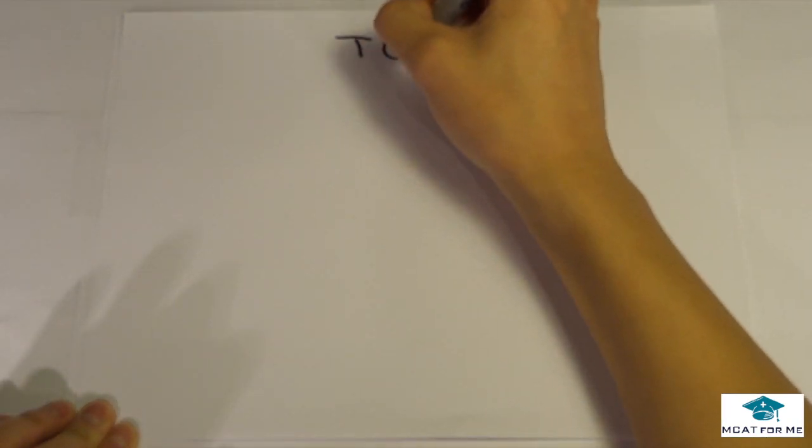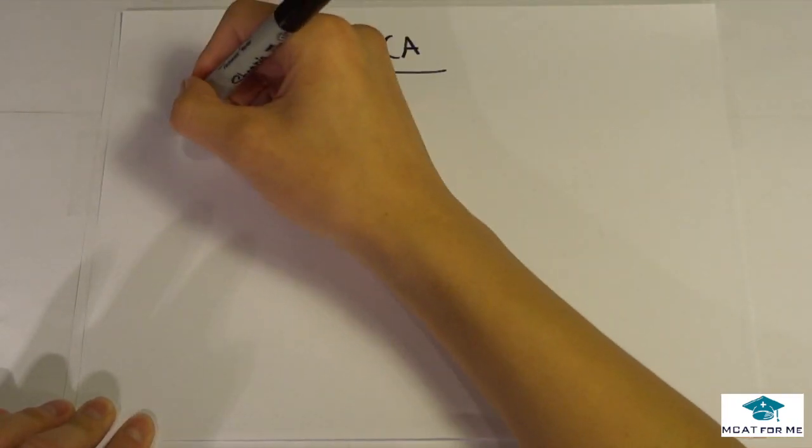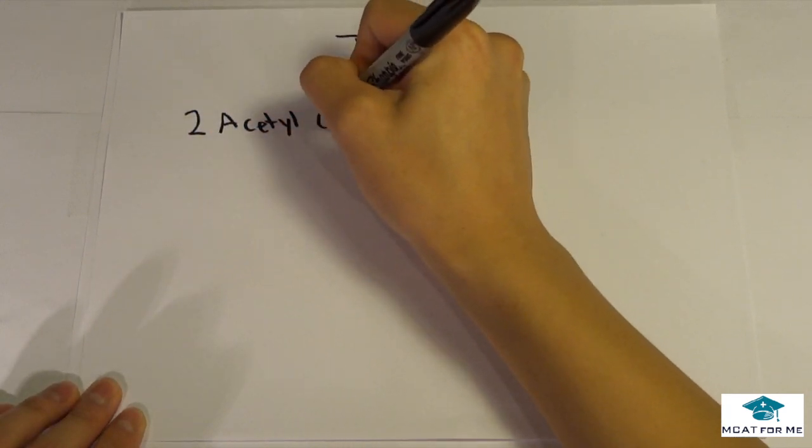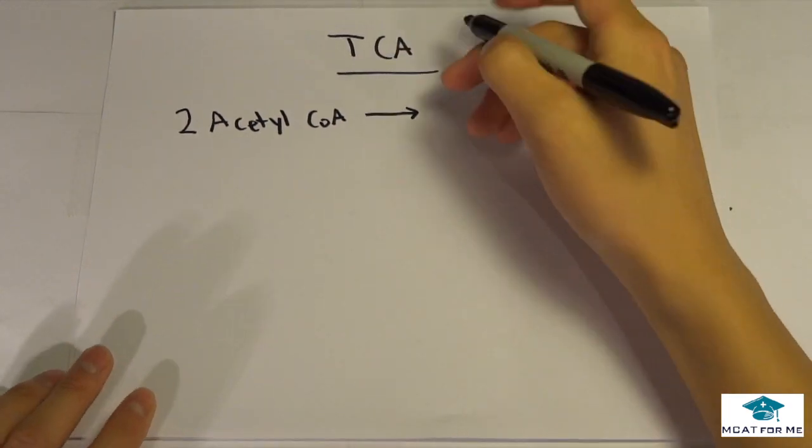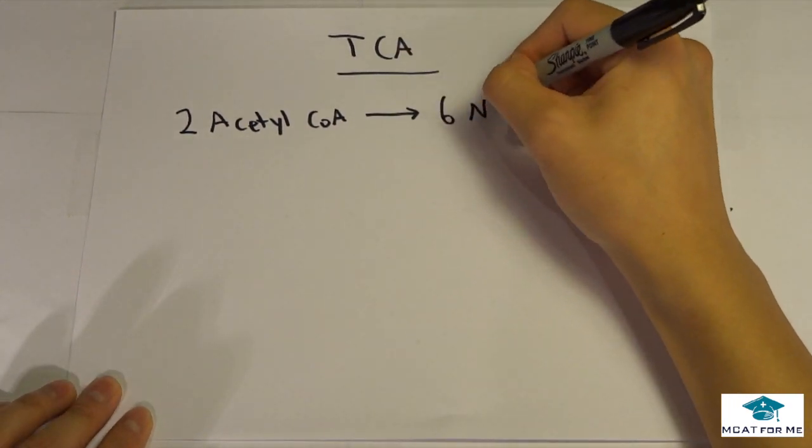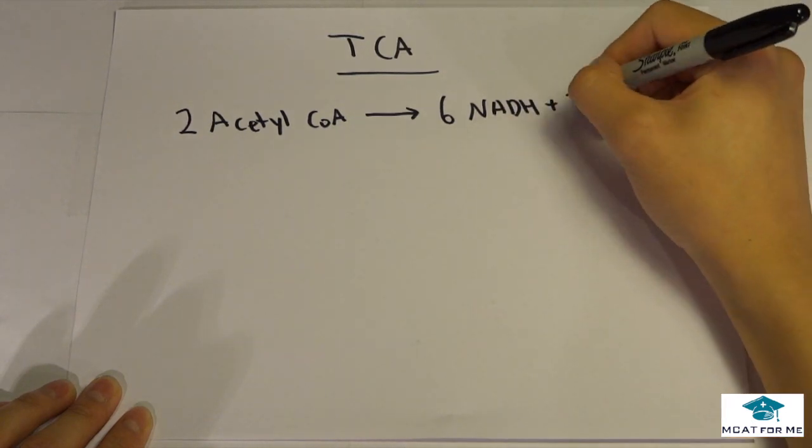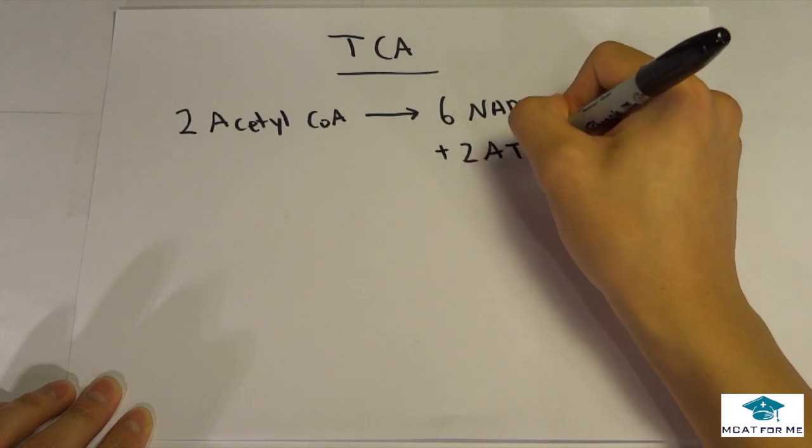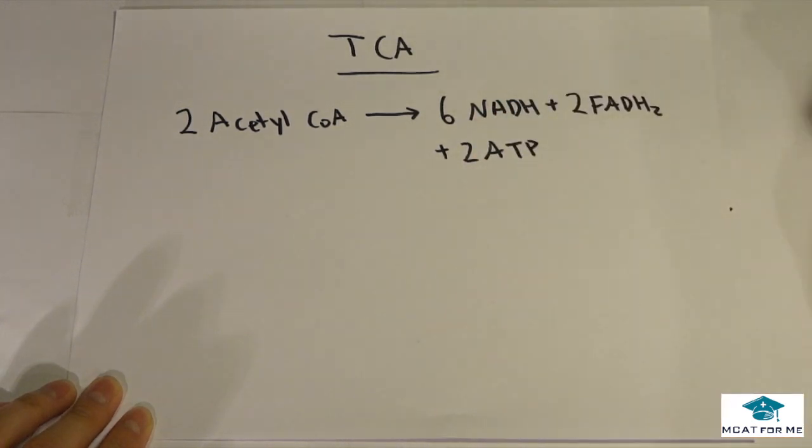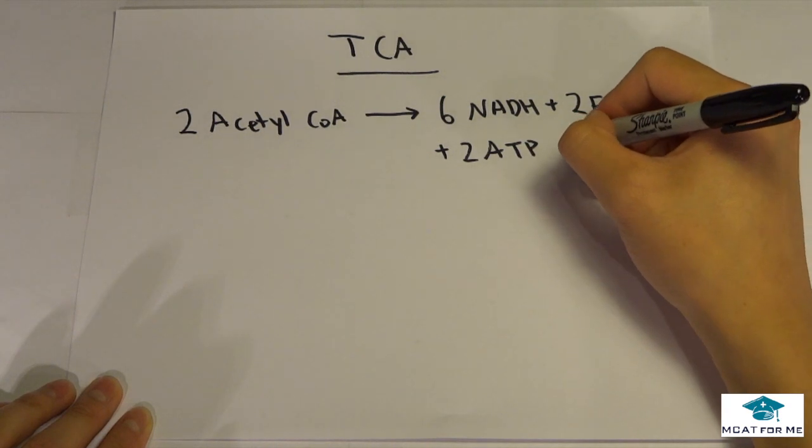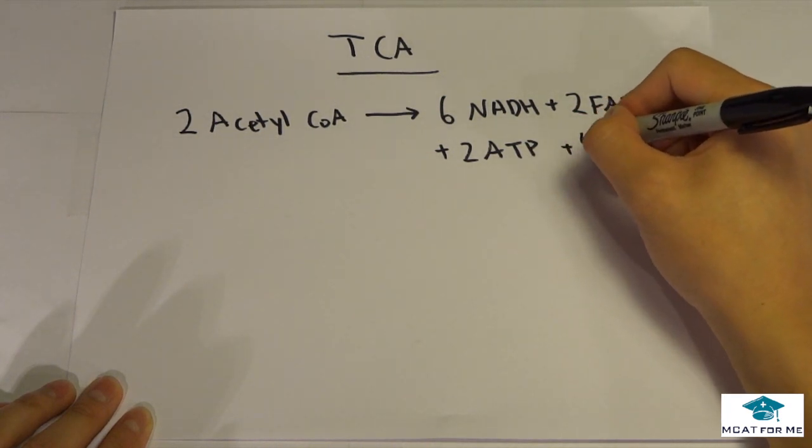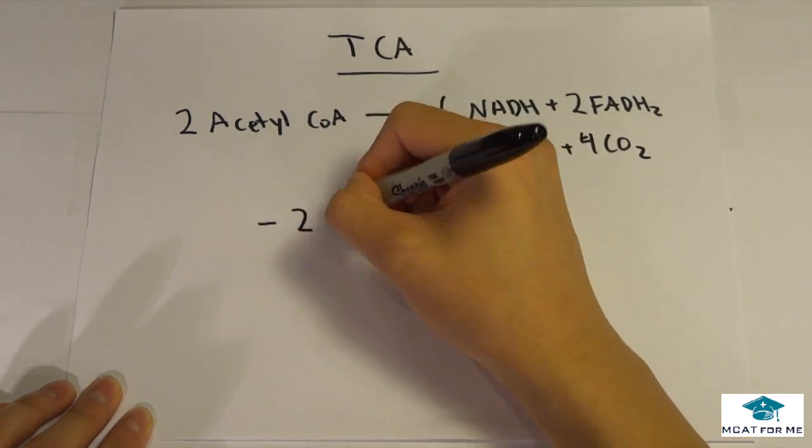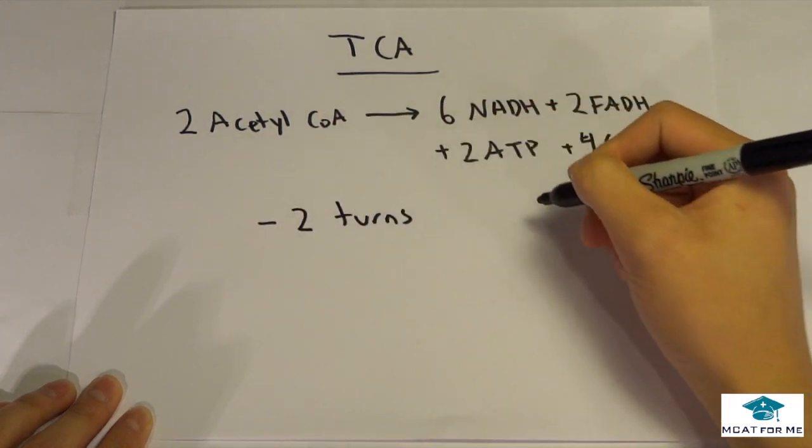Now onto the TCA. What do you need to know about the TCA cycle? The basic equation is the 2 acetyl-CoA. These are going to go and form 6 NADH. They're going to form 2 FADH2, 2 ATP. In reality, these are GTP, but GTP and ATP are pretty much the same. And it's also going to release 4 CO2. What do you need to know? You need to know these have two turns. There's two turns to the TCA cycle, not just one.